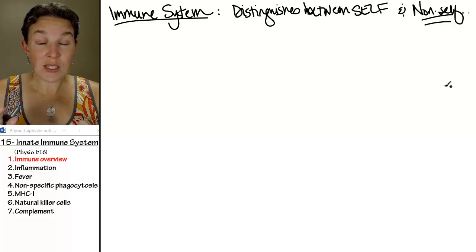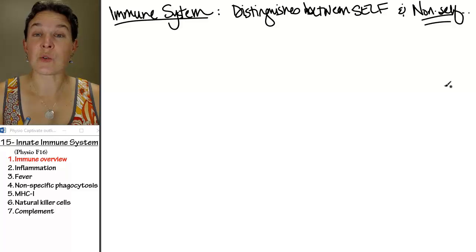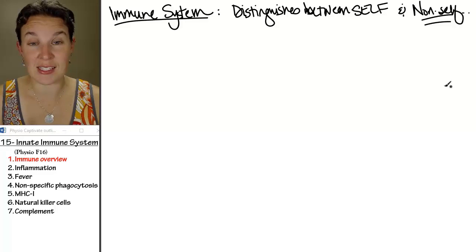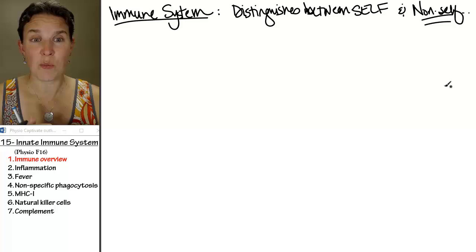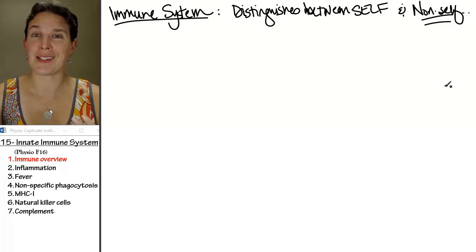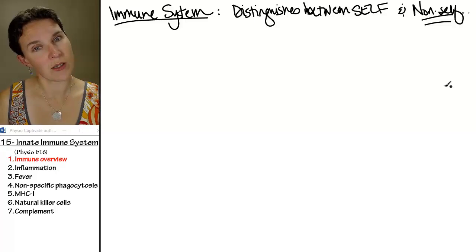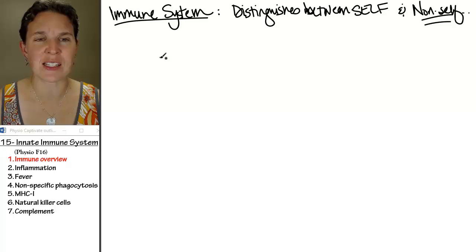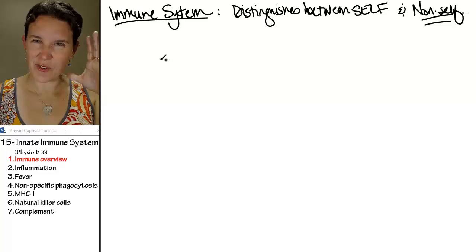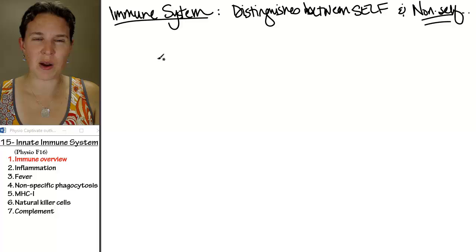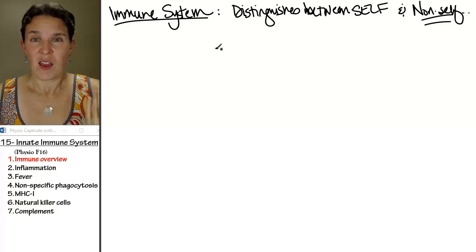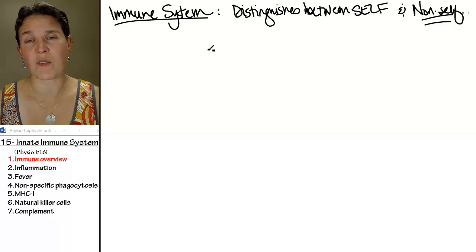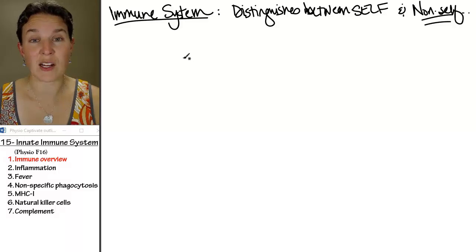So the immune system, we're breaking it down into two parts, and what you'll see is that the two parts that we've broken the immune system down into are really not even real, like most things. Humans like to classify things, and it makes it easier for our brains to compartmentalize, but the immune system, there's a huge amount of overlap between these two categories.